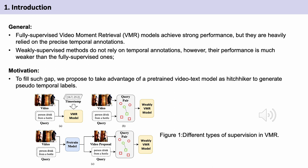This paper deals with video moment retrieval, VMR, in a weakly supervised fashion, which aims to retrieve local video clips with only global video-level descriptions. Scrutinizing the recent advances in VMR, we find that the fully supervised models achieve strong performance, but they are heavily relied on the precise temporal annotations. Weakly supervised methods do not rely on temporal annotations, however, their performance is much weaker than the fully supervised ones.